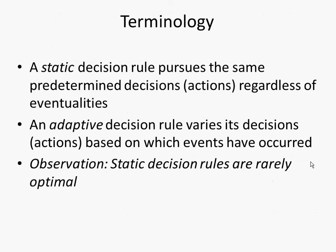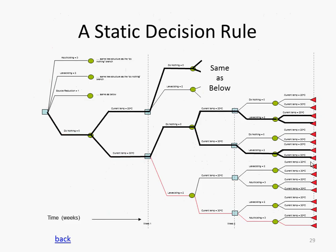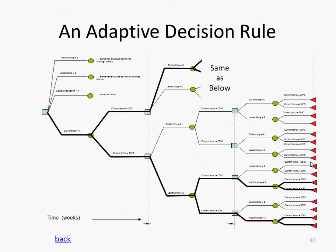Here's an example. A static decision rule: no matter what happens — temperature high or temperature low — we do nothing. An adaptive decision rule: in week two, if temperature is low we do nothing, but if temperature is high we do larviciding. We are changing what we're going to do based on observations. The question is how to tie these things together.